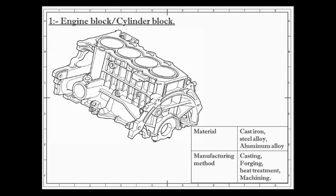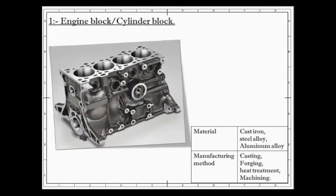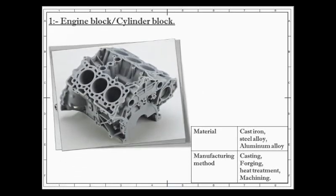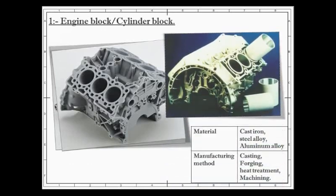Thus the material for an engine cylinder should be such that it can retain sufficient strength at such high pressure and temperature. For ordinary engines, the cylinder is made of ordinary cast iron. But for heavy duty engines, it is made of steel alloy or aluminum alloy. Sometimes, a liner or sleeve is inserted into the cylinder which can be replaced when worn out. As we can see in this figure, this is known as the cylinder liner.